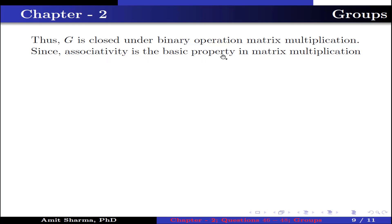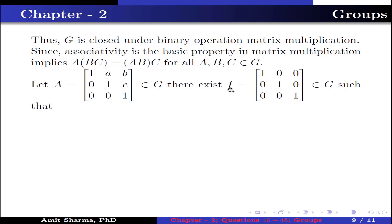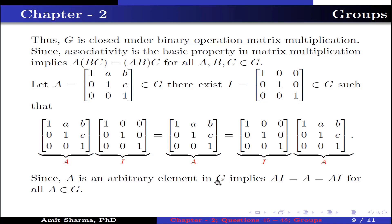Since associativity is a basic property of matrix multiplication, A(BC) = (AB)C for all A, B, C in G. For the identity: the identity matrix I = [1,0,0; 0,1,0; 0,0,1] belongs to G such that A·I = A = I·A for all A in G. Thus identity exists in G.